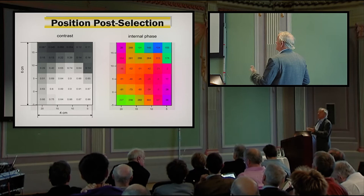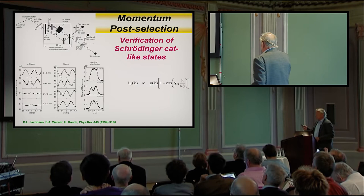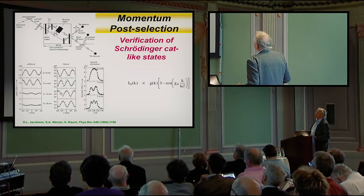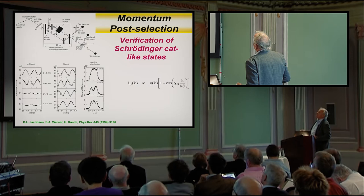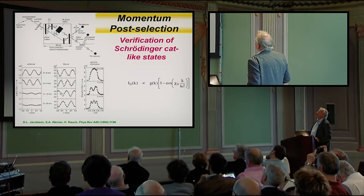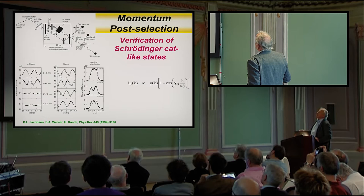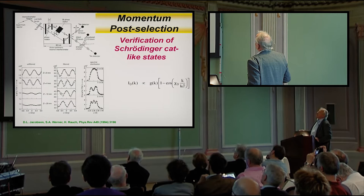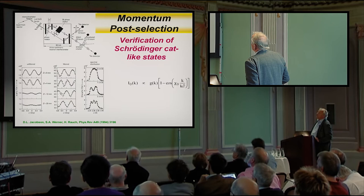Here is momentum post-selection. You see, when you have this situation that the packets do not overlap here, because you have a thick phase shifter, then they do not overlap. But when you monochromatize or take a filter, you increase the size of the packets, and they overlap. And then you see again interference pattern, whereas the whole beam does not show this interference anymore.